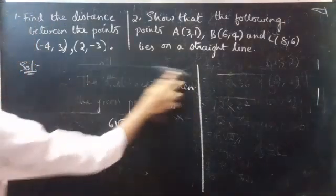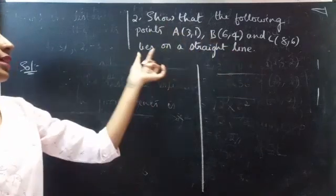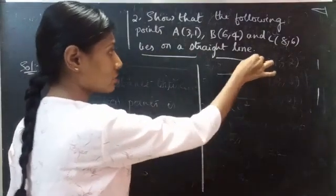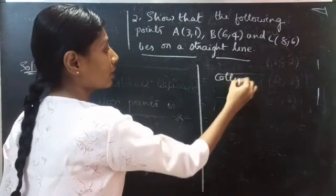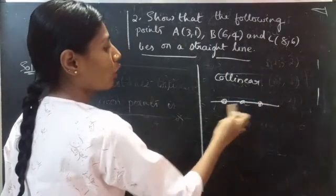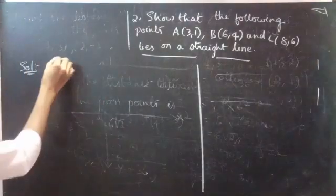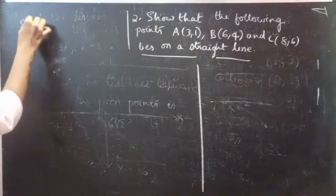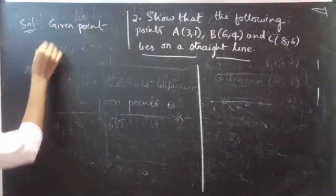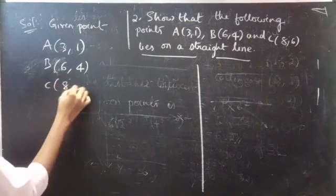Now, coming to the second problem: show that the following points A, B, C lie on a straight line. What does it mean? We have to show that the points lie on the straight line — it is nothing but the points are collinear. If all the points lie on the same line, then we call the points collinear. Given points: A(3, 1), B(6, 4), and C(8, 6).